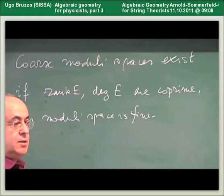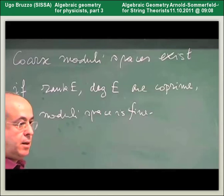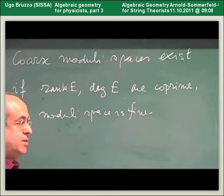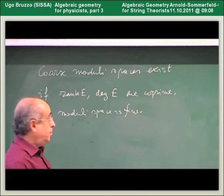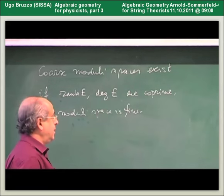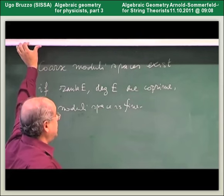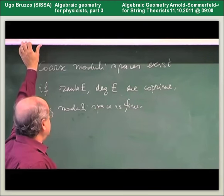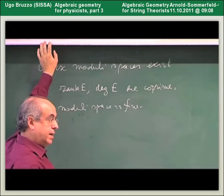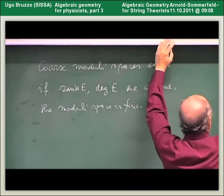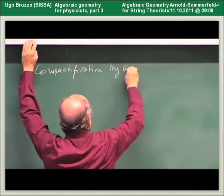We are left with two considerations. The first is whether this moduli space is compact. In algebraic geometry parlance, whether it is projective. In general it is not, unless the degree and the rank are coprime. There is a compactification obtained by adding semi-stable bundles.